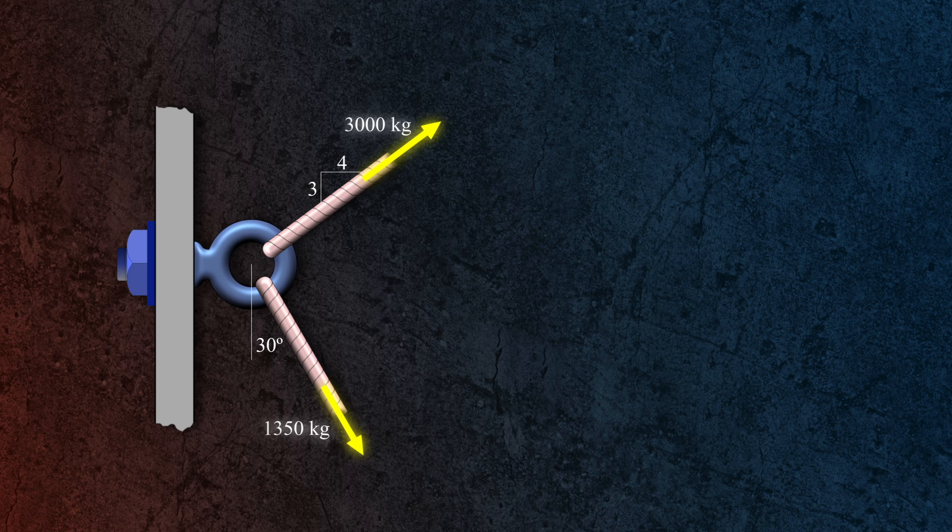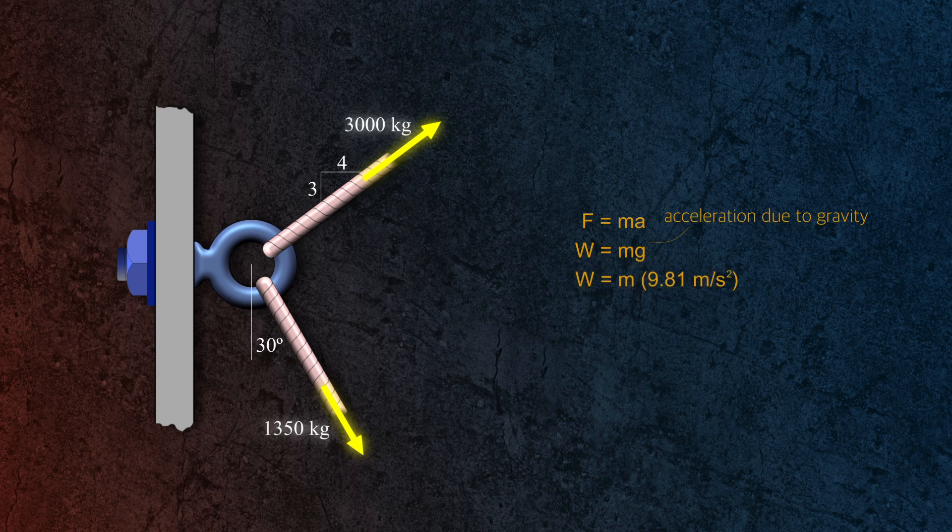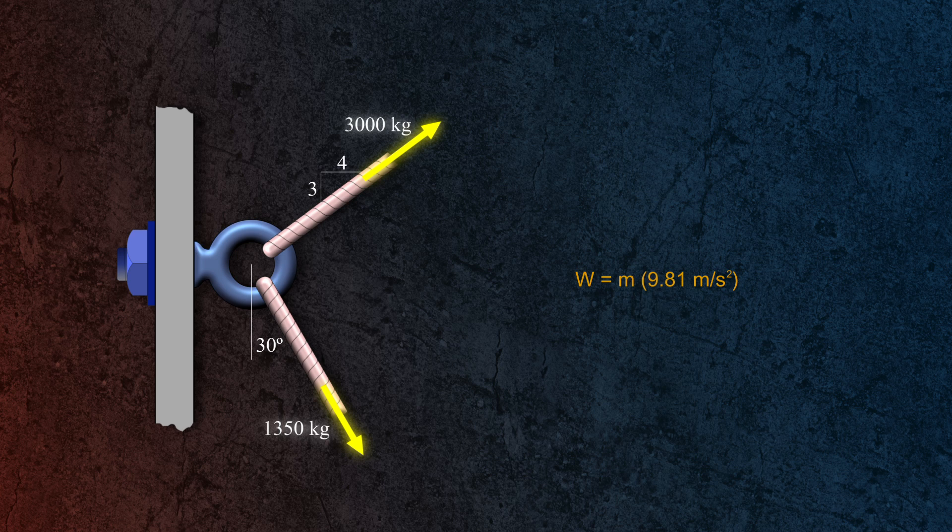To begin, since the given values are in kilograms, we first need to calculate the weights acting on each rope. Weight is actually a force and is calculated using Newton's second law, F equals ma. In this case, the mass is given and the acceleration is due to gravity, which is approximately 9.81 meter per second squared. So the formula becomes weight equals mass times the acceleration due to gravity.